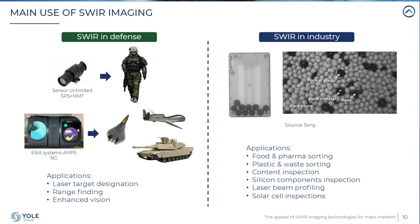SWIR is also used in industry, a field that is increasing in volume. Most objects have a specific reflectance in the SWIR domain, providing different contrast depending on the nature of the object. This is very useful for sorting applications — food, pharmaceutical goods, plastics, waste, and textiles. Several plastic contents are transparent in SWIR, making it useful for content inspection, such as monitoring the liquid level through a plastic bottle. It is also used for laser beam profiling in telecom and solar cell inspection.